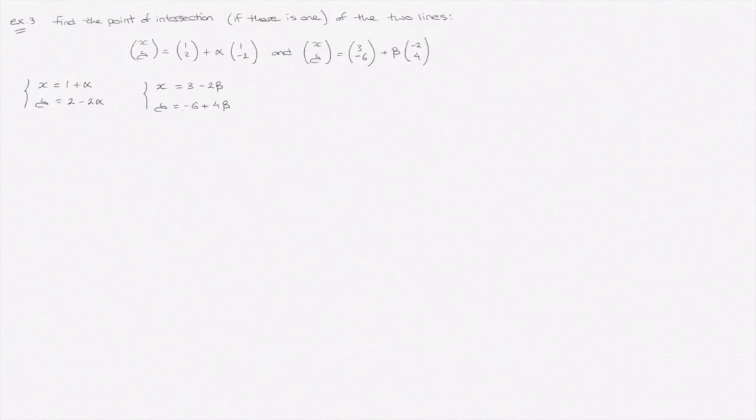Now that we've done that, we're going to equate each of the expressions for x in the two lines, so that would be x equals 1 plus alpha equated with x equals 3 minus 2 beta, and we do the same for y, so y equals 2 minus 2 alpha and y equals negative 6 plus 4 beta.